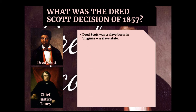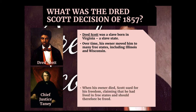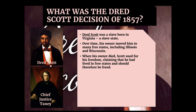Dred Scott was a slave who was born in Virginia, a slave state, so he was born a slave. Over time, his owner moved him to many free states, including Illinois and Wisconsin. The question becomes: if you're born a slave in a slave state, are you still a slave when you move to a free state? When his owner finally died, Scott sued for his freedom, claiming he had lived in free states and should be free. Abolitionist lawyers came to his aid, hoping to establish an important legal precedent.